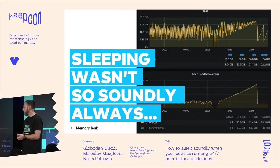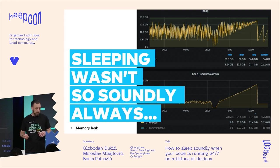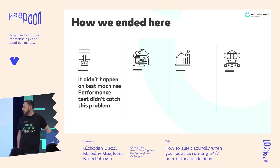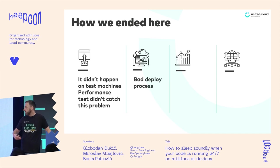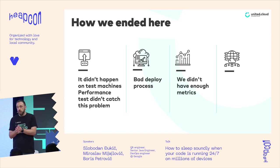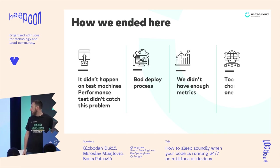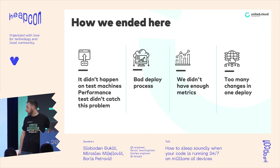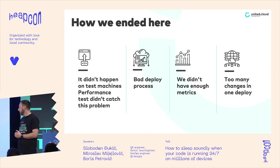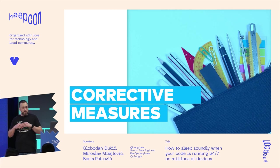That upgrade was part of a really long-living branch that existed for about three months — we had even forgotten when we deployed it. Most importantly it had been sitting on our test environment for about a month and we hadn't noticed any problem. How did we end up here? Why did our performance tests not catch the problem? Was something wrong with our deploy process? Could we have had more metrics exposed to see memory usage increasing even before the heap dump? We had too many changes in one deploy and had a really hard time finding what caused the problem.